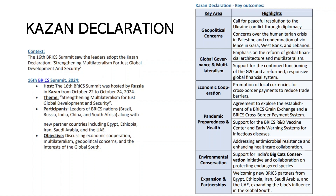Next, on international relations — the 16th BRICS Summit was held, and after its completion, the leaders adopted the Kazan Declaration. It was hosted by Russia in Kazan and held from October 22nd to 24th. The theme was 'Strengthening Multilateralism for Just Global Development and Security.'